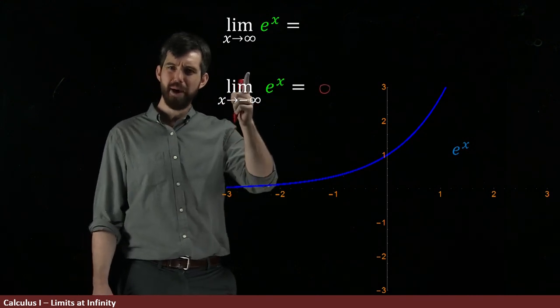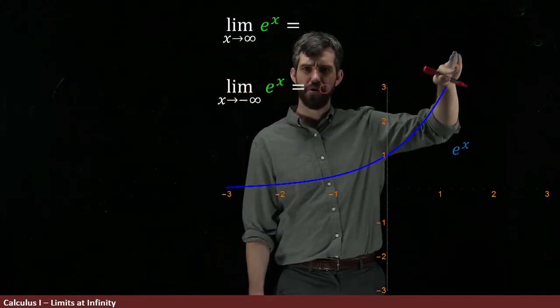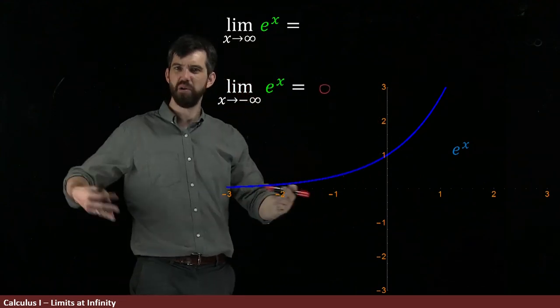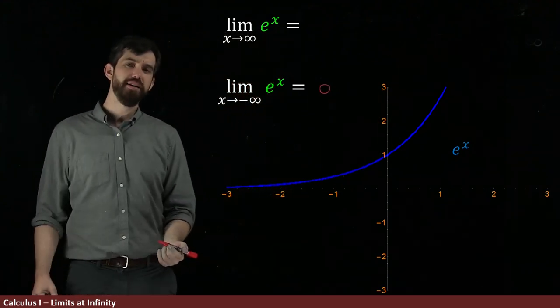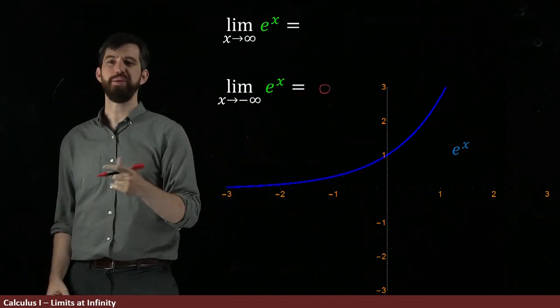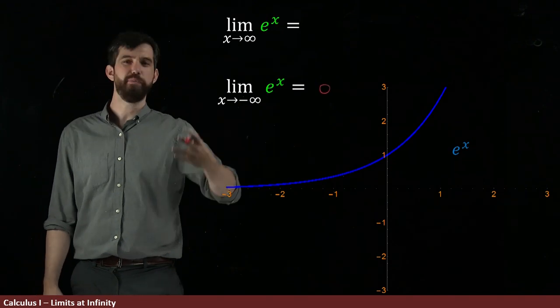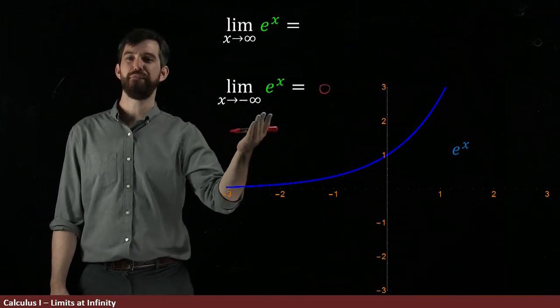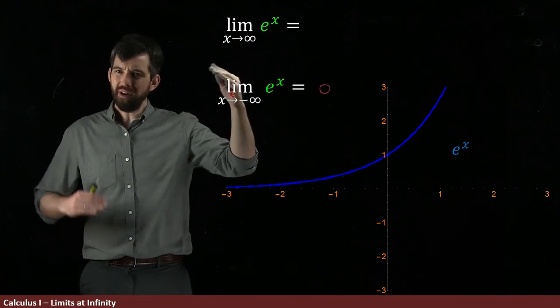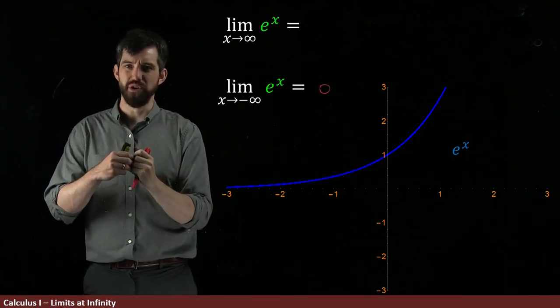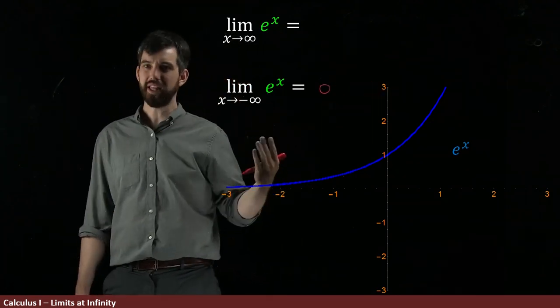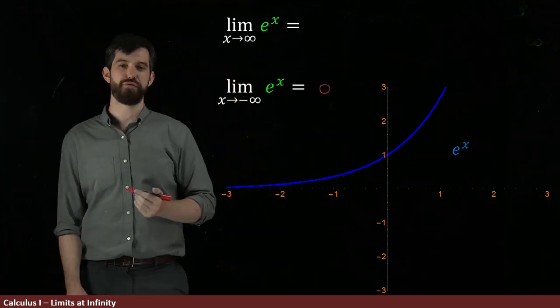But what about what happens as x goes to positive infinity? I'm going over here. But exponential, it increases forever. It gets bigger and bigger and bigger. So this is not like this example where it got arbitrarily close to zero. If I wanted to be within 0.1 or 0.01 or 0.001, I could just go far enough to the left. But that's not true on the right. It never gets close to one value. It just always gets bigger. It hits a million, then it hits a billion, then it hits a trillion after some time. It just keeps on going forever.